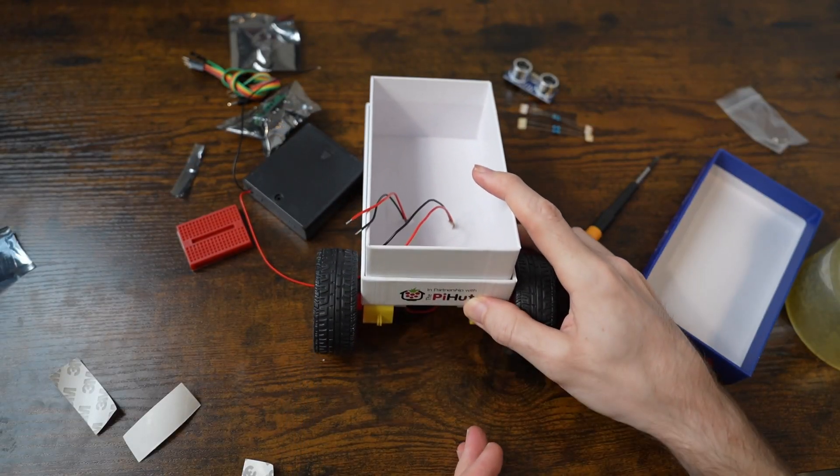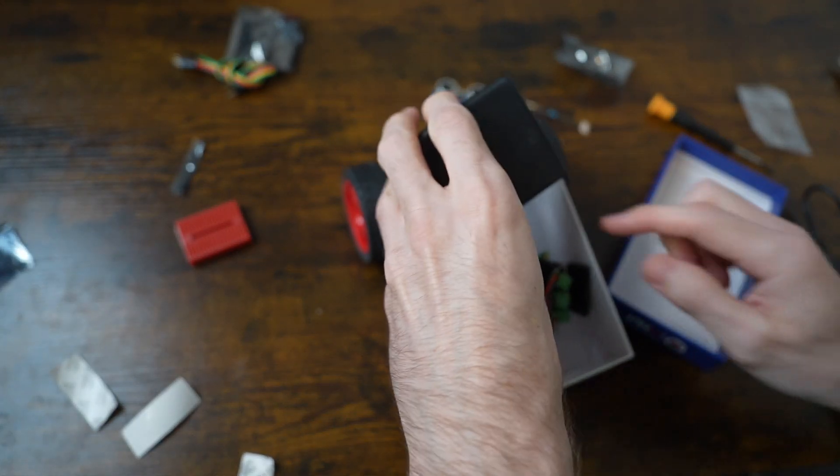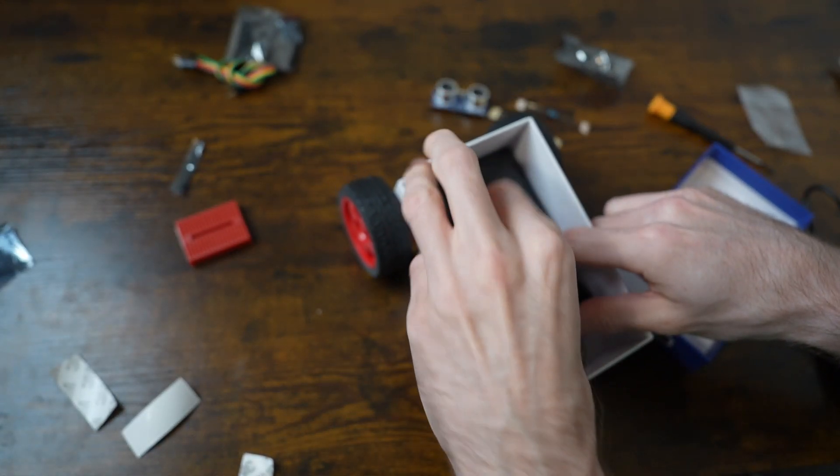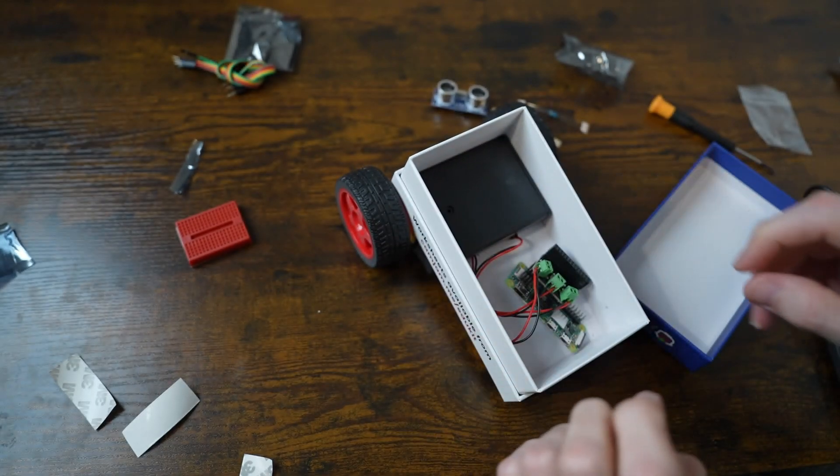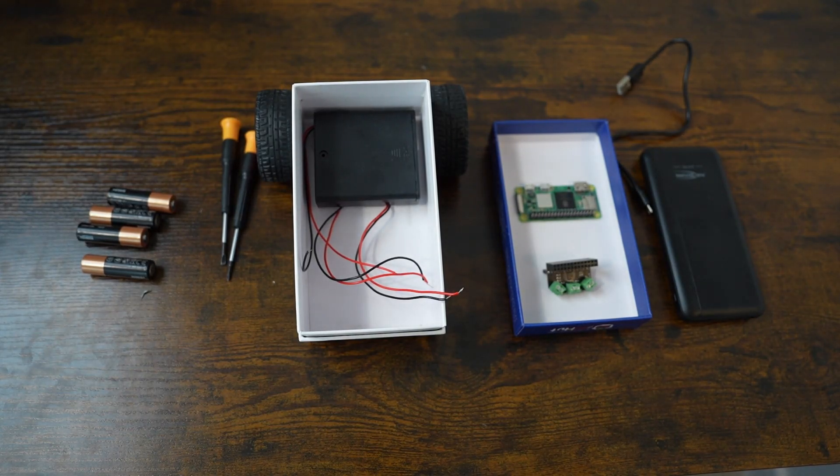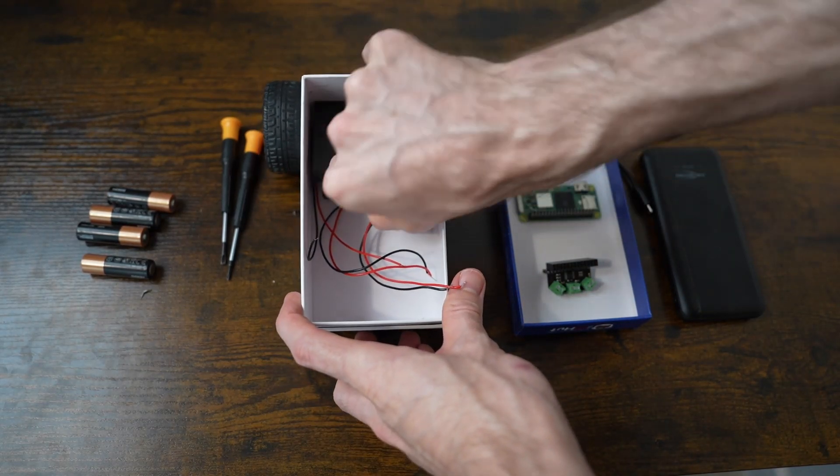Turn the robot over. Stick the battery box down with double-sided tape. Place it over the motors, as the weight will help the robot to gain traction more easily. Position it in the middle. This gives enough space to remove the cover so that you can insert batteries.